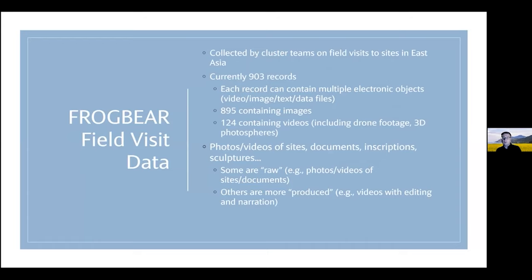Each record is an entry basically in the library's database that contains one or more electronic objects — more or less a file: a video, an image, could be a text file or a data file like a spreadsheet. Of those, the vast majority contain one or more images — 895 have images — and 124 contain videos of different kinds. Some of those are drone footage, some are what we call photo spheres, where people take a series of photos to create a 3D panorama.